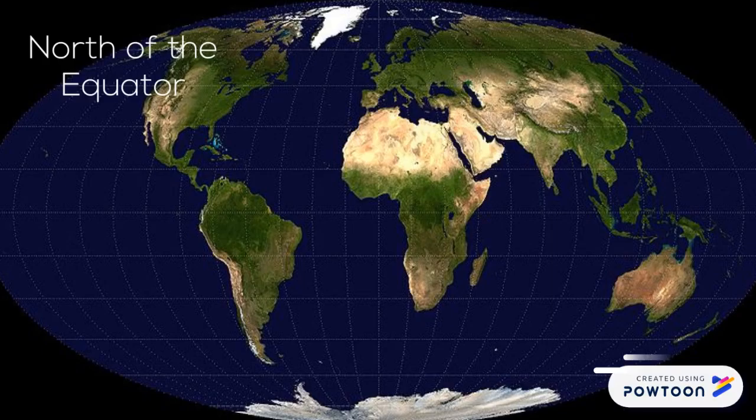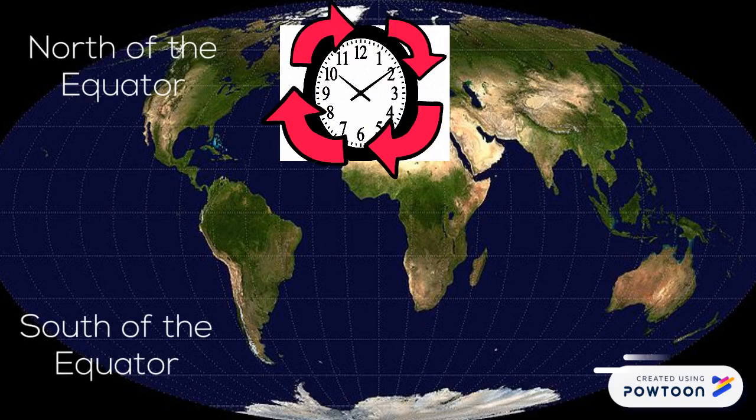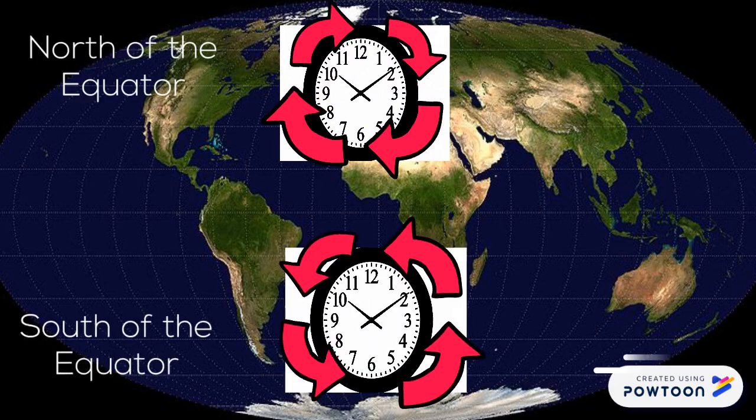North of the equator, ocean currents and winds tend to rotate clockwise, while south of the equator, ocean currents and winds tend to rotate counterclockwise.